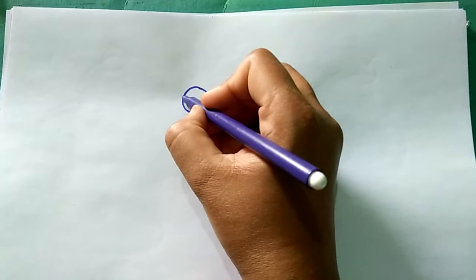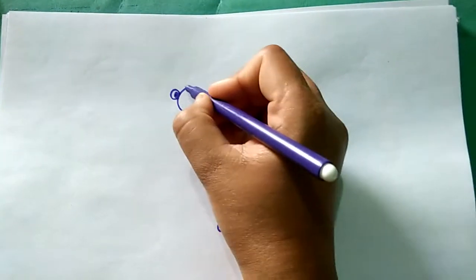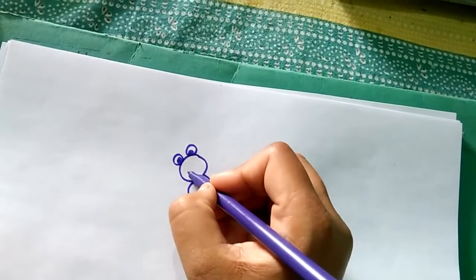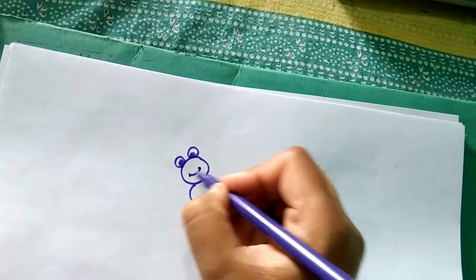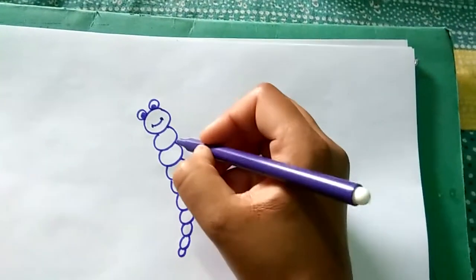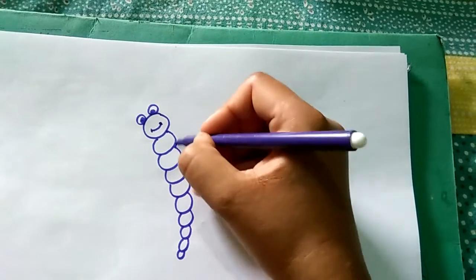Okay, now here I draw a circle. Now for the wings, you can see the wing shape.